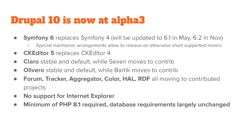There are also a bunch of other modules moving to contrib: Forum, Tracker, Aggregator, Color, HAL, and RDF. We'll probably move more in Drupal 11. These are mostly single-use modules that don't have an ecosystem in contrib, don't have further modules that depend on them, and most are not very well maintained in core. For example, Color module could do a lot of good things if it got some love from maintainers in contrib. There are better solutions for Aggregator in contrib, so we don't need to compete with better contrib solutions by keeping an inferior core solution. We can reduce the maintenance burden in core and set these free. They will move to contrib as they are in core, so if you want to use them as they were, you can use that branch.